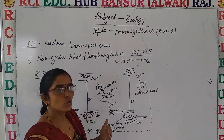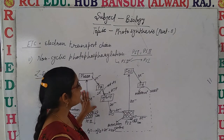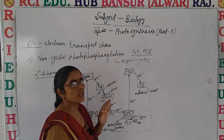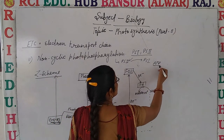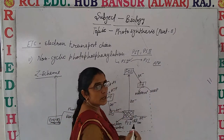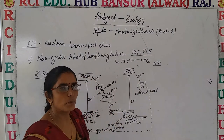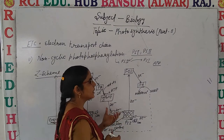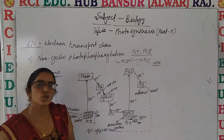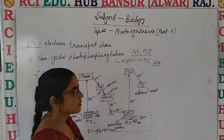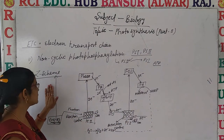In cyclic photophosphorylation, only formation of ATP takes place. But in non-cyclic photophosphorylation, not only is ATP formed, but formation of NADPH + H⁺ also takes place. So let's discuss non-cyclic photophosphorylation further — these are the key energy molecules produced.